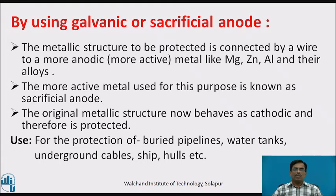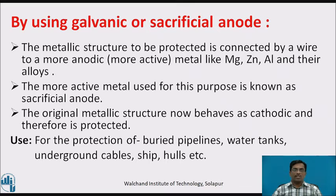The more active metal used for this purpose is known as the sacrificial anode. It undergoes the sacrificial anodic process and gets lost. The original metallic structure now behaves as a cathode and therefore gets protected.